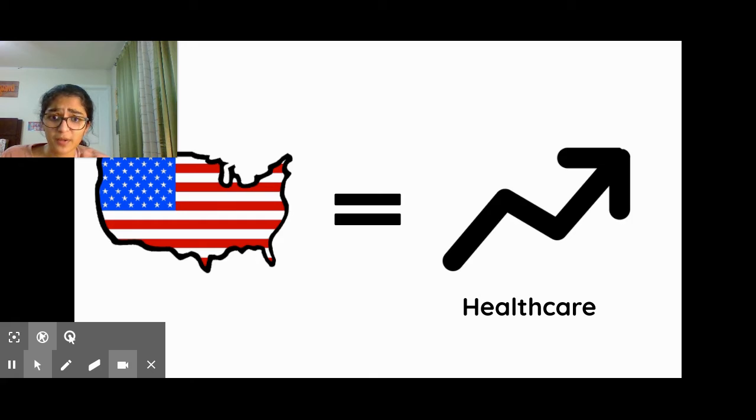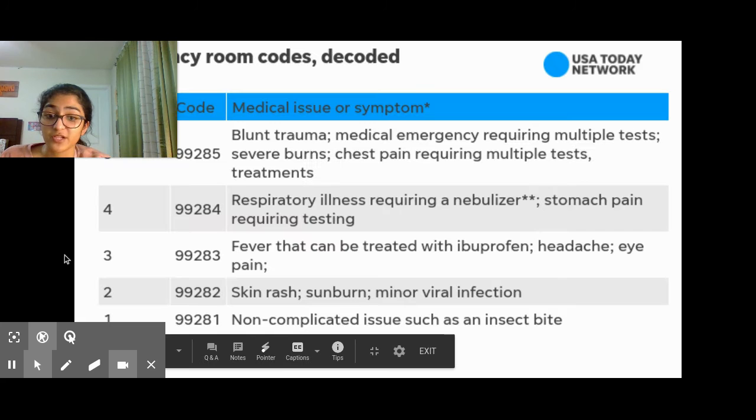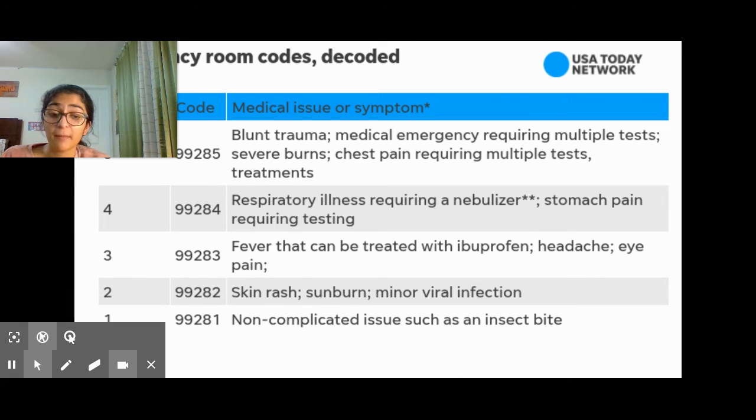And what is more concerning about this number is that this is just the price to access medical care in America. It doesn't include extra charges such as IVs, blood tests, drugs, or any other treatments. And along with this, another important note to take is that there are different levels or codes of severity of a physical problem or injury when being brought into the ER room. These codes range from 1 to 5, with 1 being a non-complicated issue, such as an insect bite, to 5 being a medical emergency requiring multiple tests.